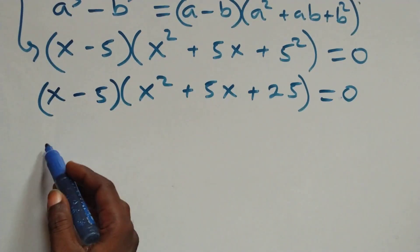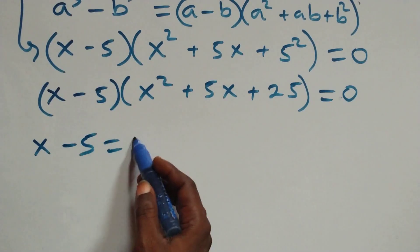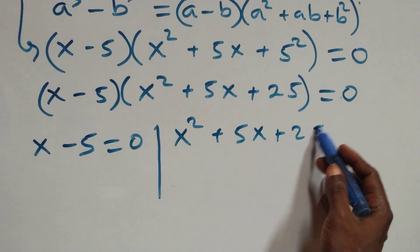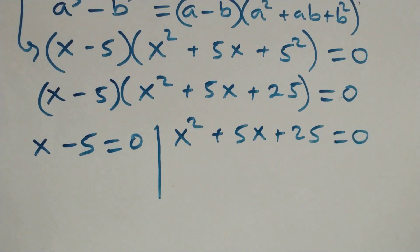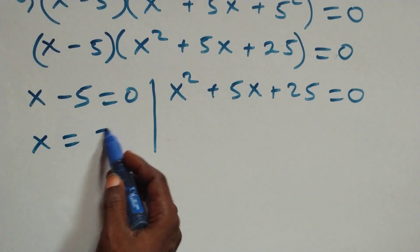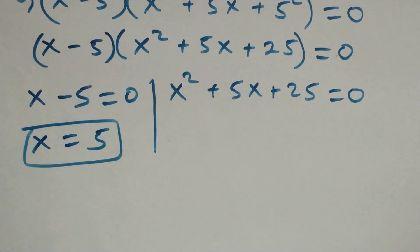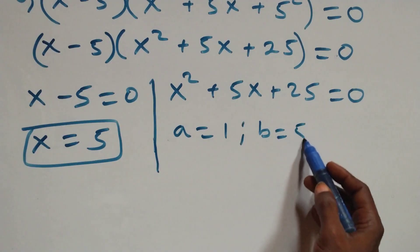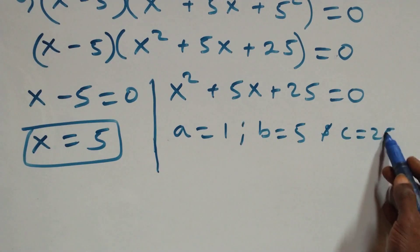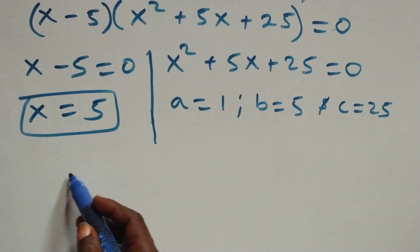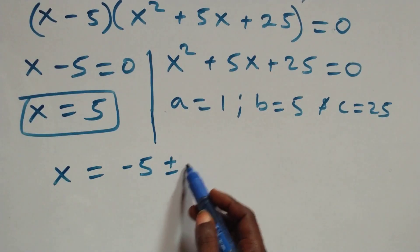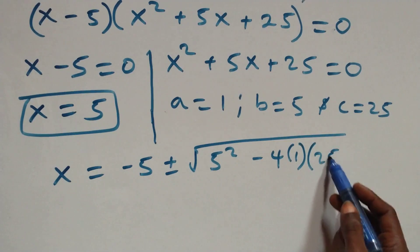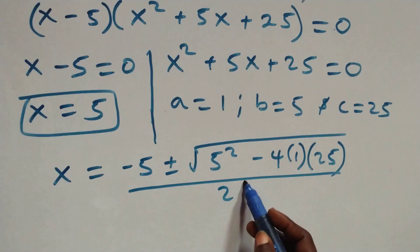From this factored form we again have two possible cases: x minus 5 equals zero, or x squared plus 5x plus 25 equals zero. Solving the first sub-case gives x equals 5, which is also a real solution.